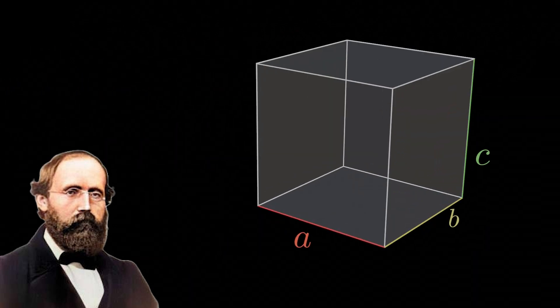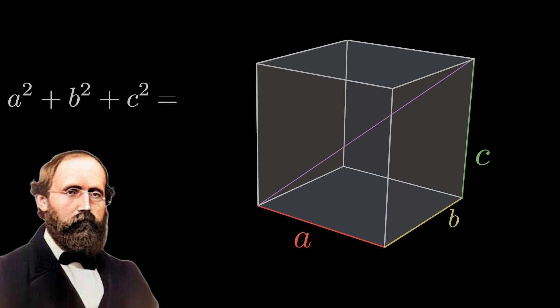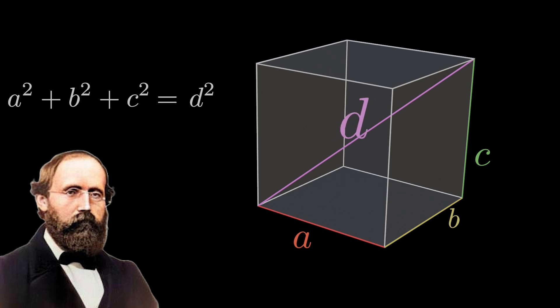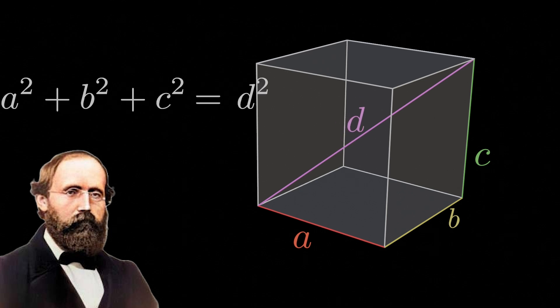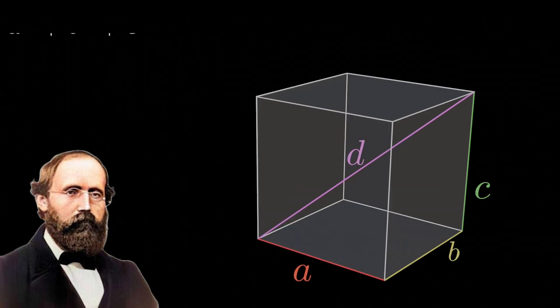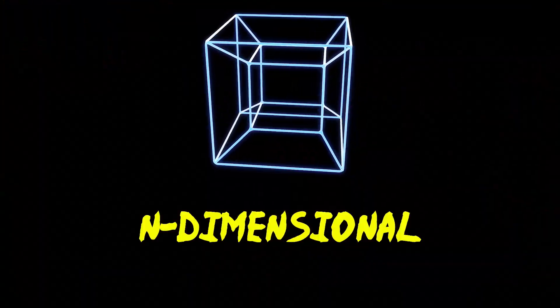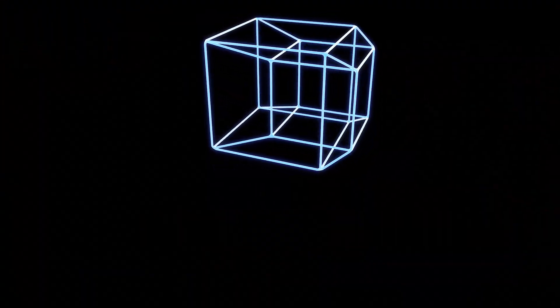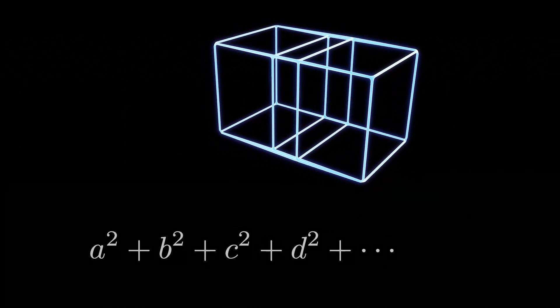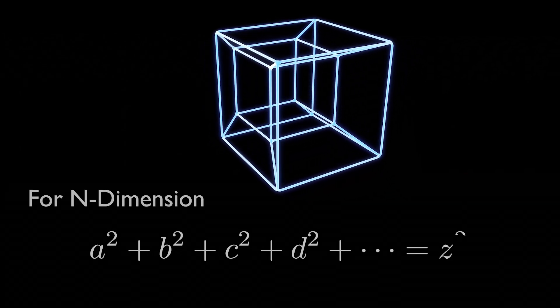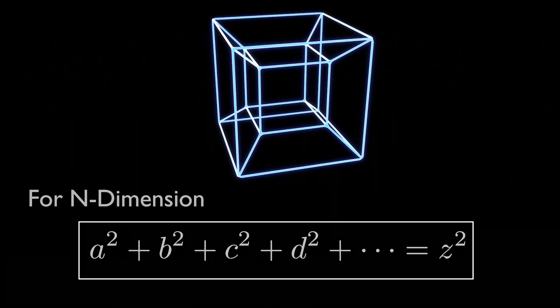For three-dimensional space, the theorem can easily be generalized. It states that the sum of the squares of three adjacent sides of a cube is equal to the square of the diagonal. So if A, B, and C represent the sides of a cube and D is its diagonal length, then... It is now simple to generalize this to the case of n dimensions. Imagine an n-dimensional cube. If A, B, C, and so on, are the lengths of the sides of a hypercube, and Z is the length of the diagonal, then...